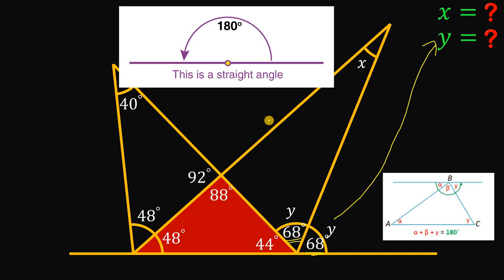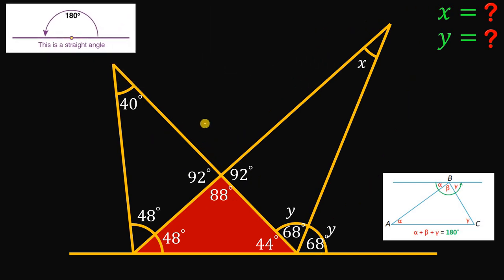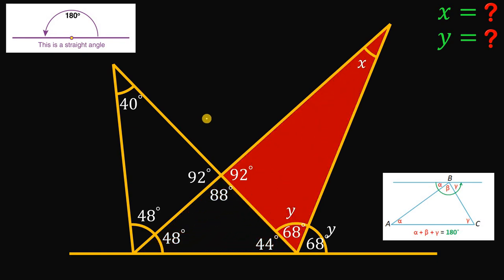Now, how about the value of X? Using the straight angle concept, we know the sum of this angle, this angle, and 88 degrees must be 180 degrees. Or we can say that this angle is a vertical angle of this angle, which is 92 degrees — so we can say this angle is 92 degrees. Now let's focus on this triangle to finally solve for the value of X. Using the concept that the interior angles of any triangle must add up to 180 degrees, we know this is 92 degrees and this is 68 degrees. If we add these together, we have 160. Therefore, the remaining angle X must be equal to 20 degrees.